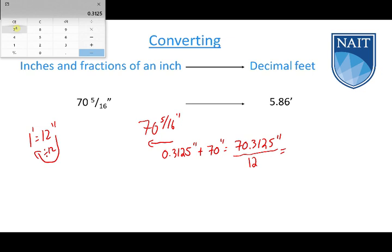If I go back to my calculator and I add the original 70 and I'm going to divide this number by 12, I get 5.859375 feet.